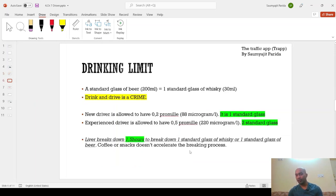Then, regarding the drinking limits. So, a standard glass of beer, which is around 200 ml, is equals to, has the same alcohol content as standard glass of whiskey. Well, drinking and driving is a crime. This is a very general fact. But this is more important that a standard glass of beer and a small glass of whiskey, they have the same alcohol content.